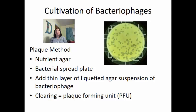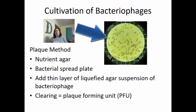A spread plate is where you culture bacteria around the whole surface so it's completely covered. Then you add a thin layer of liquefied agar containing the bacteriophage. You incubate it, which allows the bacteriophage to infect the bacteria, replicate, and kill off the bacteria. This creates clearings known as plaques. You then count the plaque-forming units — each clearing represents one bacteriophage.